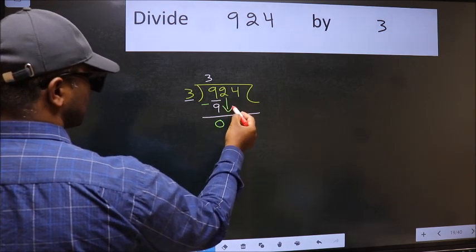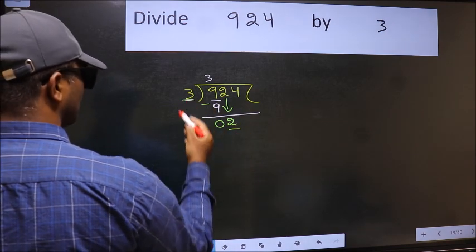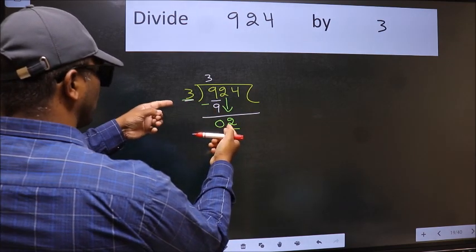After this, bring down the beside number. So 2 down. Now here we have 2 and here 3. 2 is smaller than 3.